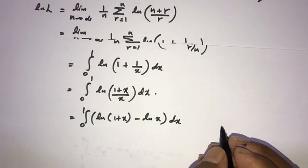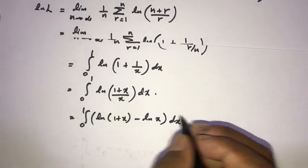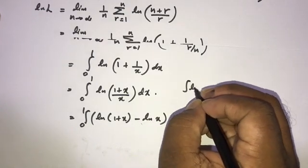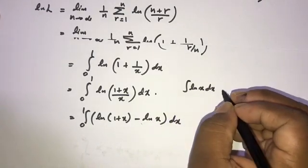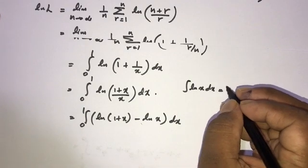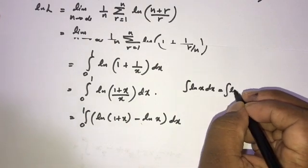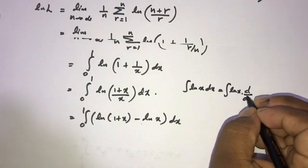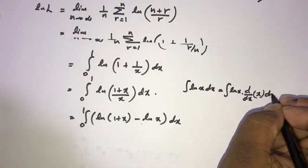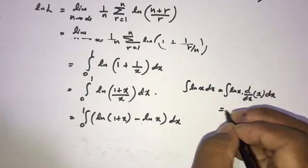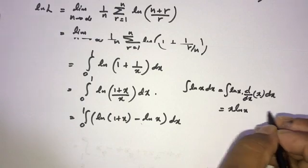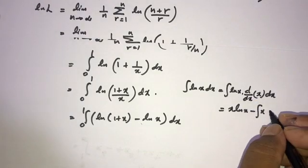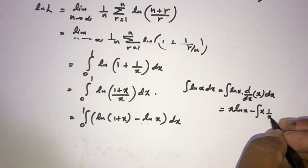We can evaluate this integral by using the integration by parts method. Taking natural log of x, we get x times natural log of x minus the integral of x times the derivative of natural log of x, which is 1 over x dx.